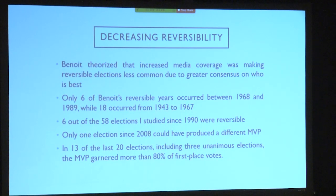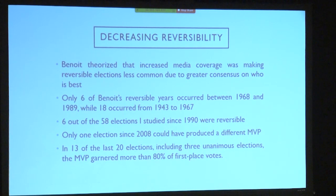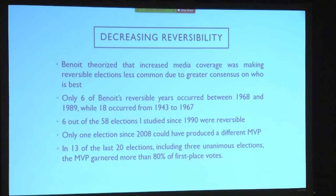One thing I mentioned before is that Benoit noticed from 1943 to 1989, the number of reversible MVPs decreased. From 1943 to 1967 there were 18 years where the MVP could have changed, but in the much bigger period from 1968 to 1989 only six were reversible. He hypothesized this is because media coverage increased. From 1943 there was less communication and no national sports TV networks, so people were more familiar mainly with their local teams and more likely to vote for their own players. But from 1968 to 1989, ESPN rose and general communication increased, suggesting that's why reversals decreased.